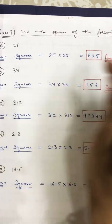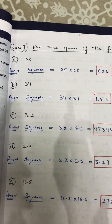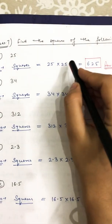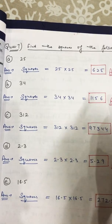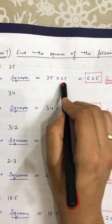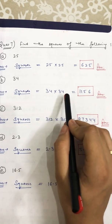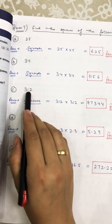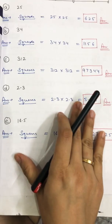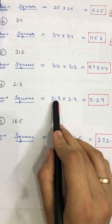Part a: 25² = 25 × 25 = 625. You should have all squares up to 20 or 30 on your fingertips; beyond that multiply carefully — students often make mistakes in simple multiplication. 34² = 34 × 34 = 1156. 312² = 312 × 312 = 97344. 2.3² = 2.3 × 2.3: multiply 23 × 23 then place the decimal.